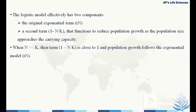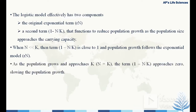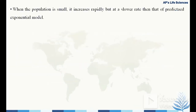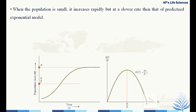When N is much smaller than K, the term (1 − N/K) is almost equal to 1 and the population follows the exponential model dn/dt = r·N. As the population approaches K, the term (1 − N/K) approaches 0, showing a slowing and eventually zero population growth. When N is much larger than K, the population is declining.